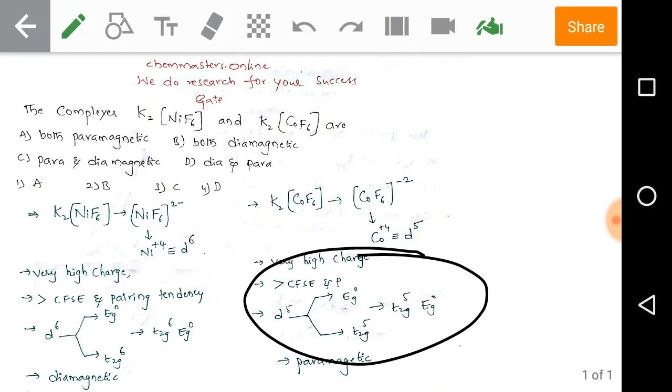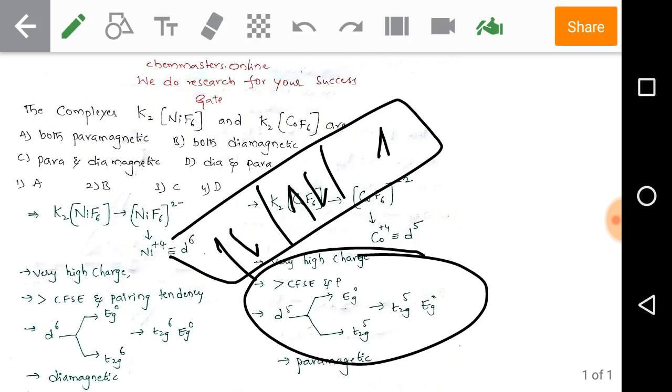When we observe the 5 electrons in t₂g, we have 2 electrons, 2 electrons, and 1 electron. This means we get only 1 unpaired electron.